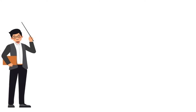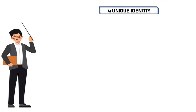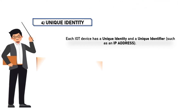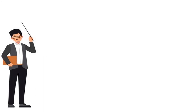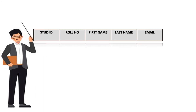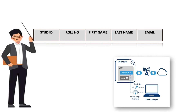4. Unique identity. Each IoT device has a unique identity and a unique identifier, such as an IP address. For example, students can be identified by their roll numbers as their unique identity. Similarly, IoT devices also have their own IP address and identity as unique.